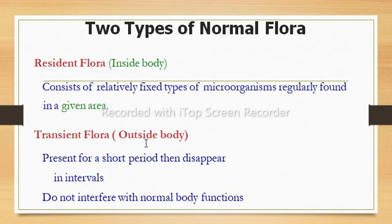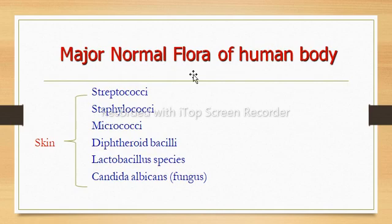Transient normal flora are present for only a short period of time and then disappear. They do not interfere with normal body functions and consist of non-pathogenic microorganisms that inhabit the skin or mucous membranes for hours or days.